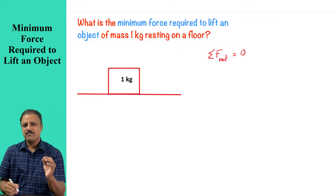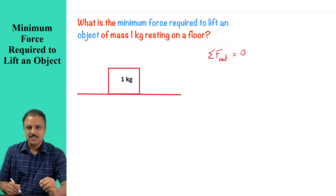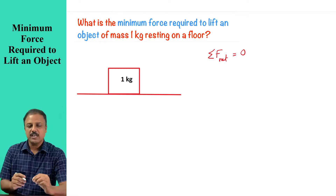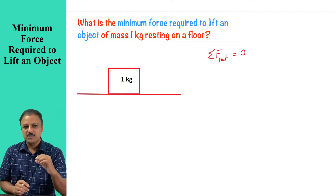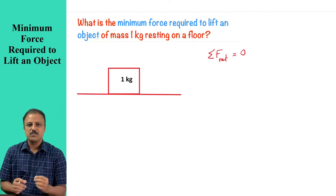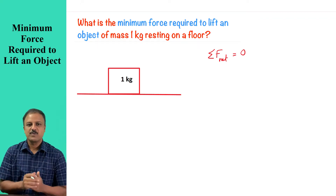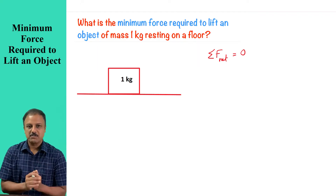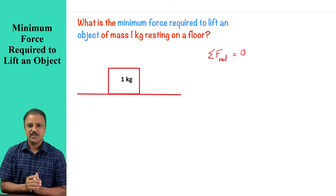When you say net force is 0, what does it mean? You are actually saying that the vertical forces and the horizontal forces balance each other. When they balance, the object can remain at rest or it can move with a constant velocity.